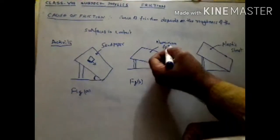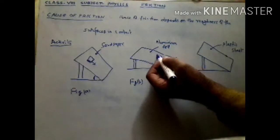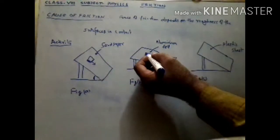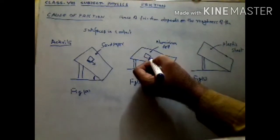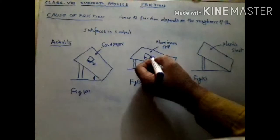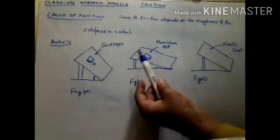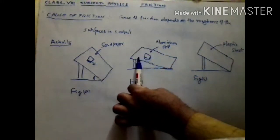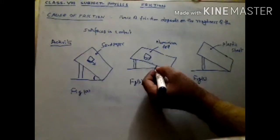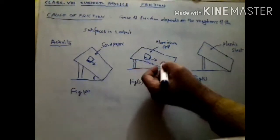Now we repeat this activity with the aluminium foil. We again place the mesh box here and see when it will slide. So when we incline the wooden tray surface, we see that up to this level of inclination — at this angle — the mesh box started sliding down.